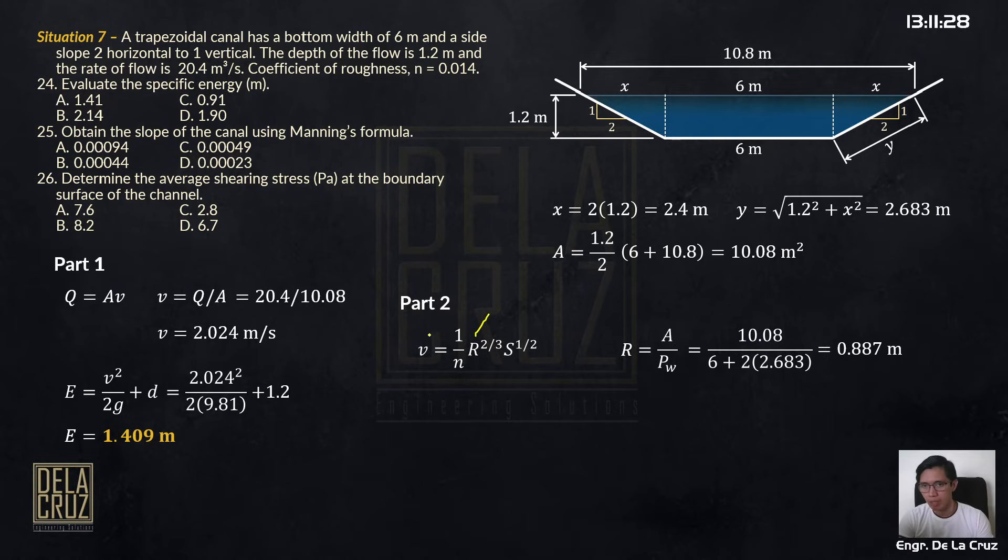So we have R. Of course we have the velocity. The slope is our unknown. The n is the roughness coefficient, that's given. So you have 2.024, 1 over n. Our R is 0.887 raised to 2 thirds. S is our unknown. We'll get the slope of the channel, 0.00094.